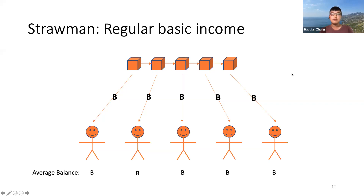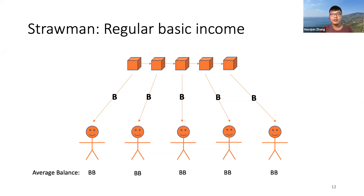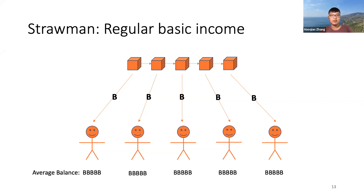So after the first month, on average everyone would have 1% of basic income. After two months, on average everyone would have 2% of basic income. And after five months, everyone would have 5% of basic income on average.